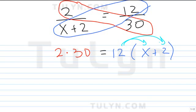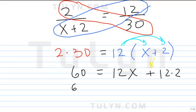Okay, now. So, 2 times 30, let's do that. That's the fun part. 12 times x, 12x. Carry over the sign in the middle, plus. 12 times 2, just write that down. So, then you get 60 equals 12x plus, what's 12 times 2? 24.